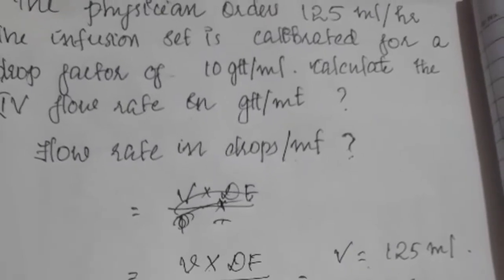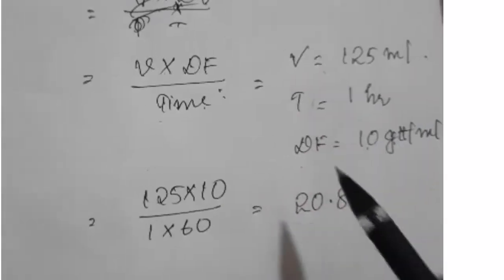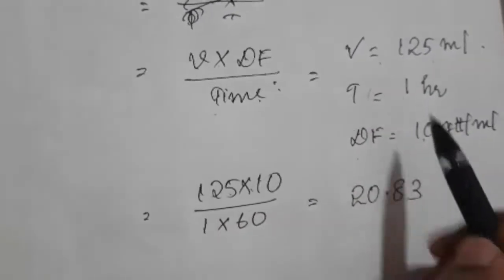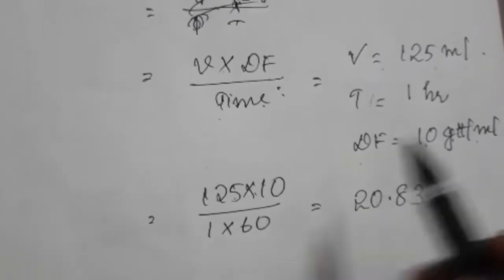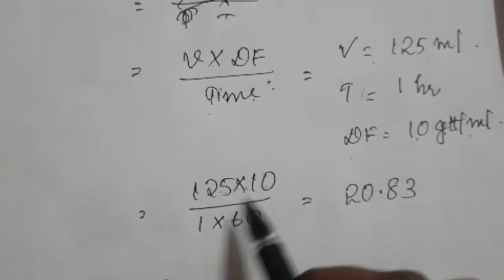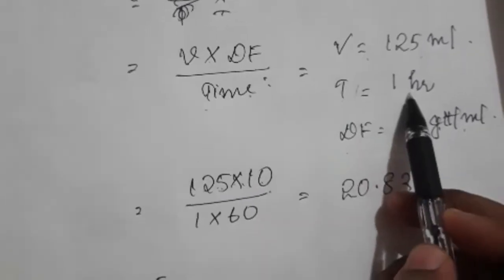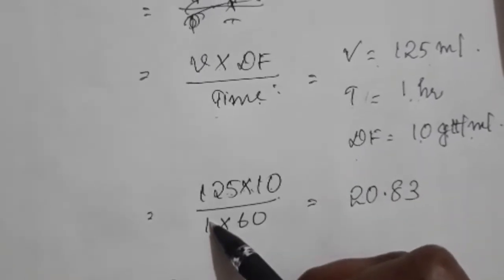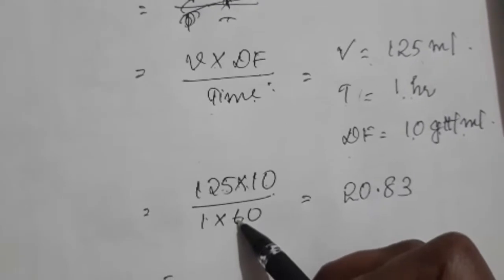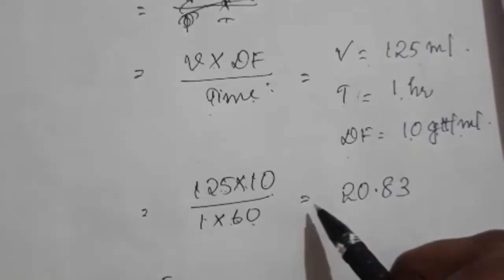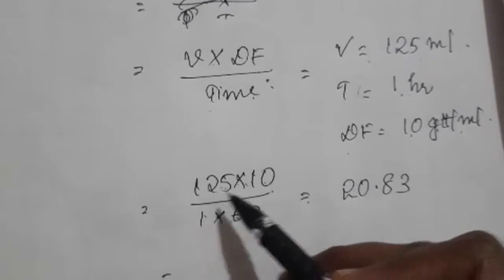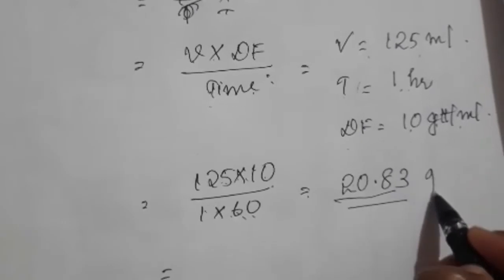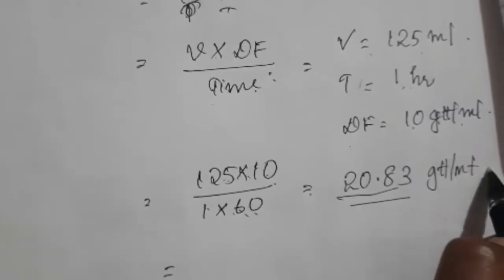Substituting the values: volume is 125 mL, drop factor is 10 drops per mL, so 125 × 10, divided by time. Time is 1 hour, which we need to convert into minutes, so 1 × 60 = 60 minutes. So the calculation is 125 × 10 ÷ 60.